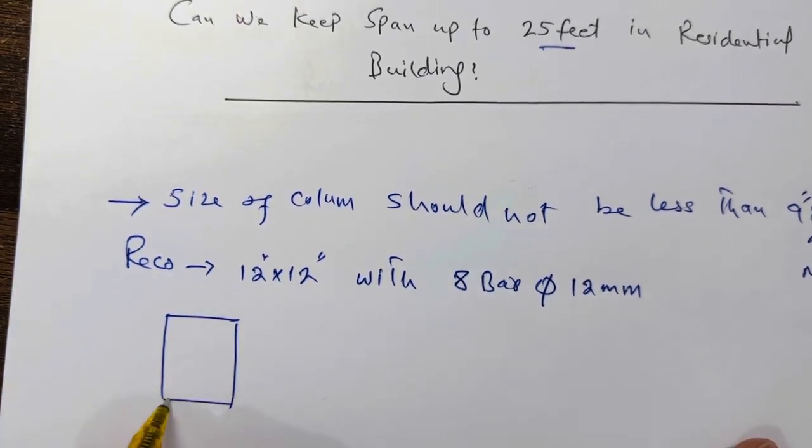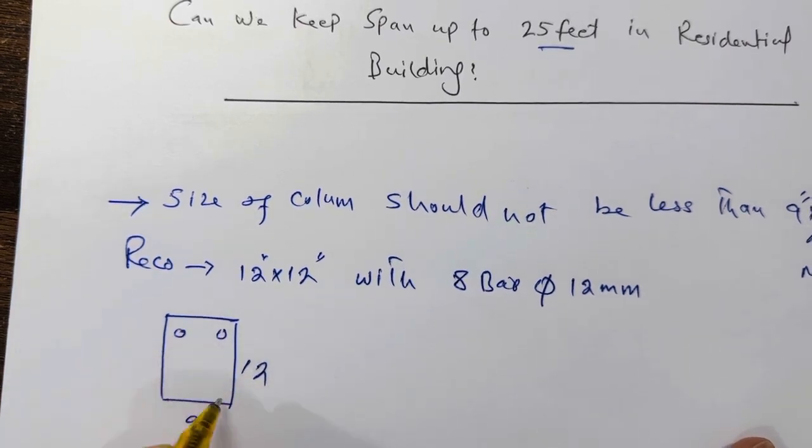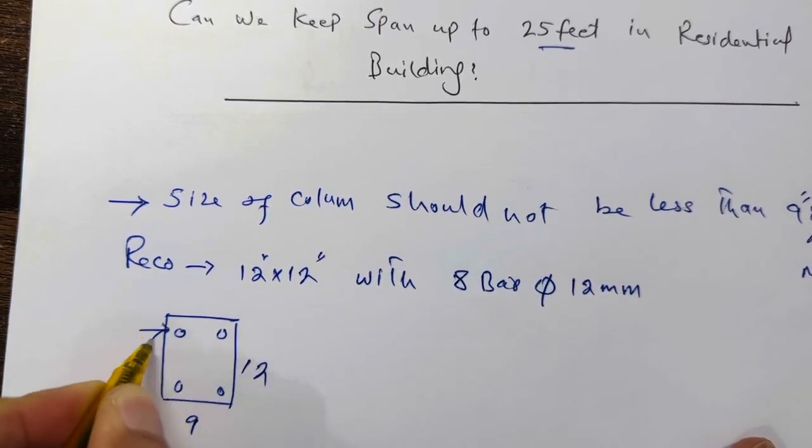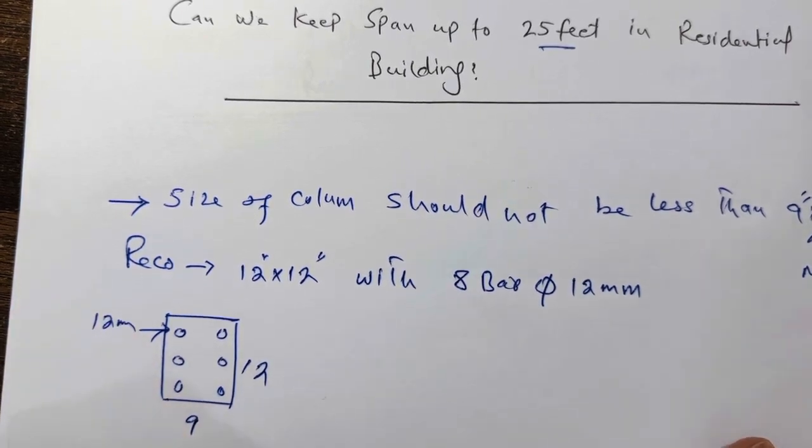So this is minimum size which is 9 inches by 12 inches inside six numbers of steel rods, and the diameter should not be less than 12 millimeter.